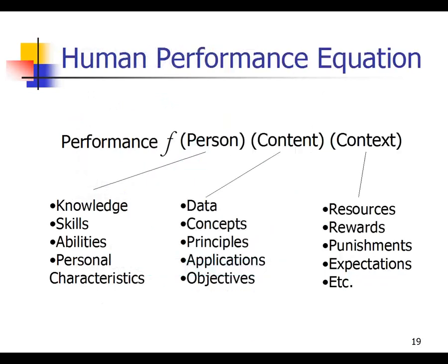Step nine addresses the human performance equation. A person's performance is a function of three components: who they are as a person — their knowledge, skills, abilities, and personal characteristics; the content — what data or information they have access to, what concepts and principles apply, and what their objectives are; and the context — what resources are available, what rewards we're offering as managers, what expectations we've set. Every individual's performance is a function of who they are, what information they're working with, and what the context is.